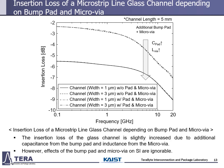I also plot the insertion loss according to channel width variations when bump pads and micro-vias are added. As shown in the graph, the insertion loss of the glass channel is slightly increased due to additional capacitance from the bump pad and inductance from the micro-via. However, the effects of bump pads and micro-vias on signal integrity are negligible. In the HBM memory channel, the loss according to channel length is dominant, so the effect of bump pad and micro-via is insignificant. This feature was also observed in silicon interposers. Therefore, in HBM memory channel simulations, pads and micro-vias are excluded.